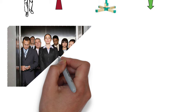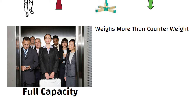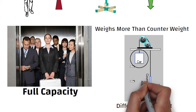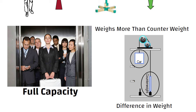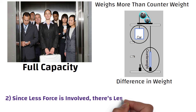Suppose the lift is loaded at its full capacity, which means it weighs more than the counterweight. In this case, the motor has to lift the difference in weight between the two and supply a bit of extra force to overcome friction in the pulleys and so on. Since less force is involved, there is less strain on the cables, which makes the elevator a little bit safer.